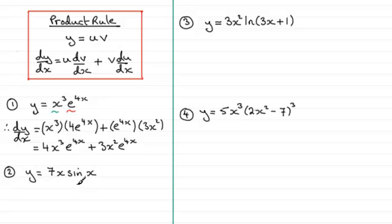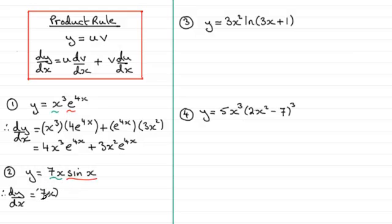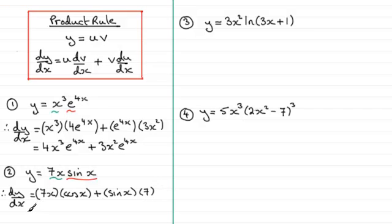Number two. We've got 7x as one function of x being multiplied by sin x. So dy/dx equals 7x multiplied by the differential of sin x, which is cos x, plus sin x multiplied by the differential of 7x, which is 7. Cleaning this up gives us 7x cos x plus 7 sin x.